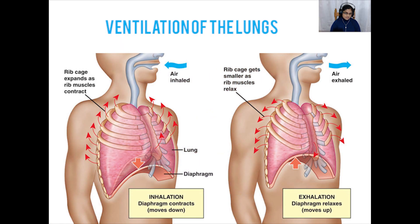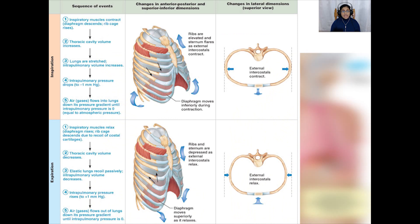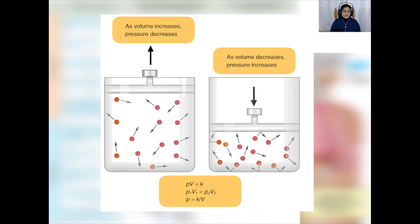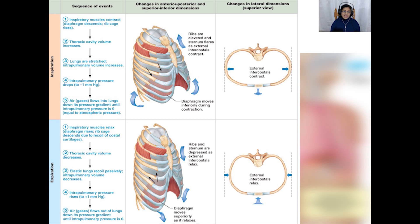Ventilation means moving air in and out of the lungs, and this requires a difference in air pressure so that air moves from a place of high pressure to a place of low pressure — very similar to diffusion. Ventilation depends on the fact that the thorax is an airtight cavity. When we breathe in, we change the volume of our thorax, which alters the pressure inside it, and this difference in pressure causes air to move in and out of the lungs.